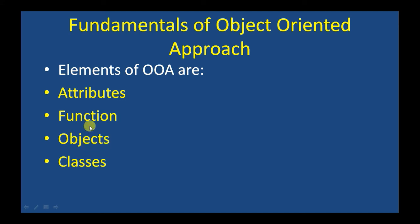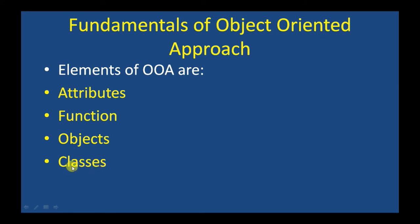An object is a real or abstract item that contains information and methods that allow it to be manipulated — or we can say an object is a real-world entity. A class is a group of objects with the same data structure and behavior. Remember: same data structure and behavior.